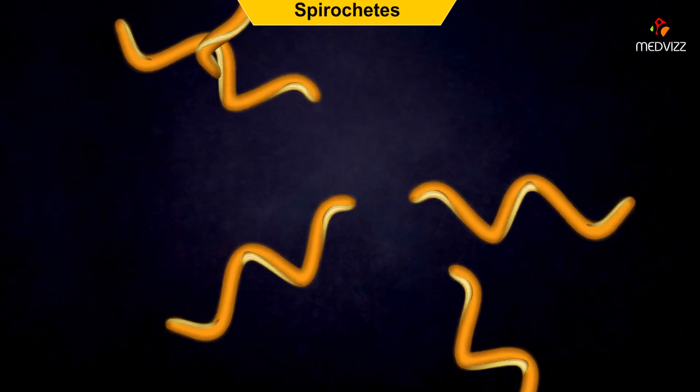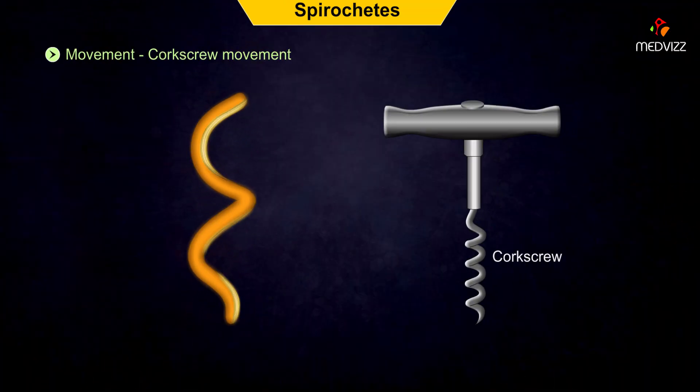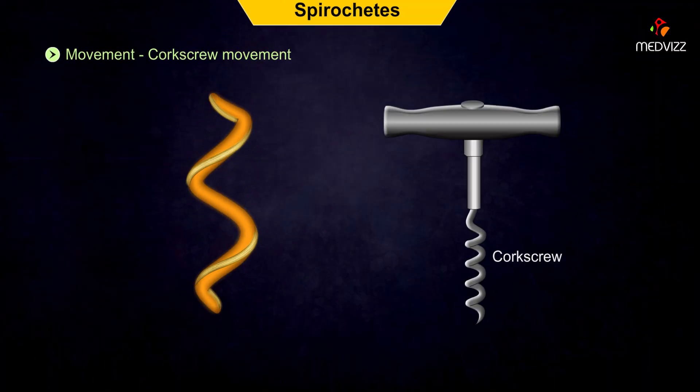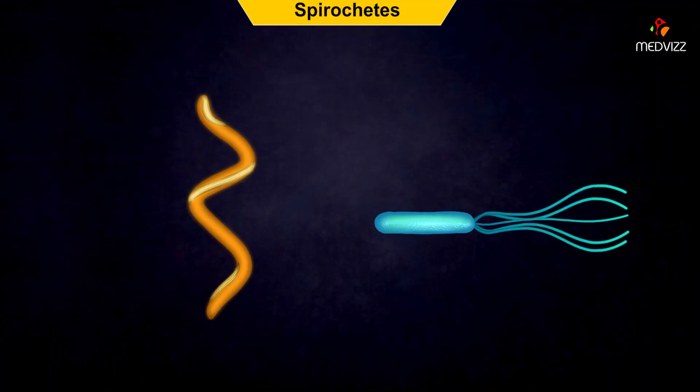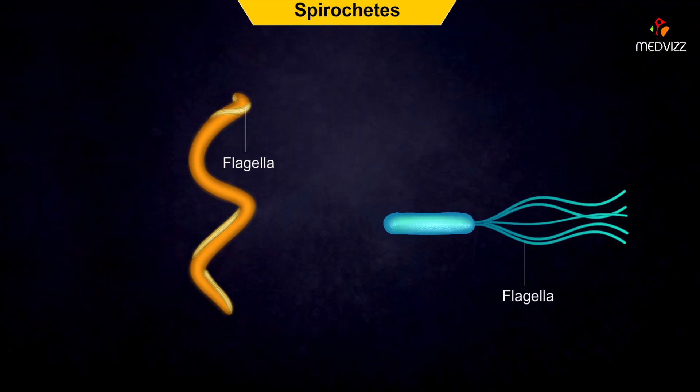Spirochetes are a group of bacteria that are spiral-shaped. They move in a corkscrew-like fashion, using flagella that do not protrude from the cell wall like typical flagella.